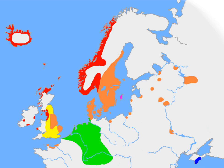Old Norse was a North Germanic language spoken by inhabitants of Scandinavia and their overseas settlements from about the 9th to the 13th century. The Proto-Norse language developed into Old Norse by the 8th century, and Old Norse began to develop into the modern North Germanic languages in the mid to late 14th century, ending the language phase known as Old Norse.